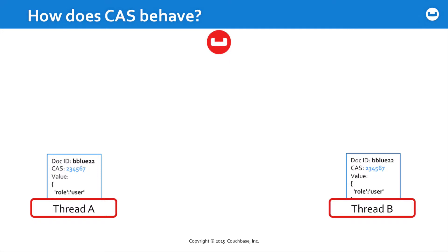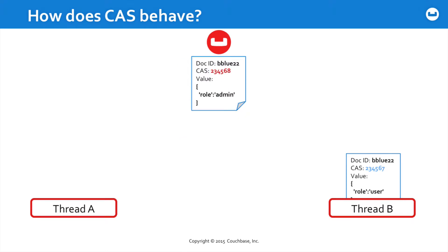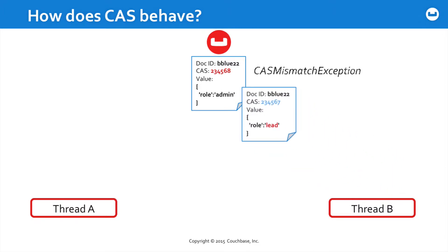Thread A then modifies the document — here changing the role to admin — and then it does a replace. The server updates the CAS value for that document; it's simply been added to the write log. Then thread B also modifies the document to a different role and attempts a replace operation. But at this point, the CAS values no longer match, and because thread B was attempting a replace, a CAS mismatch exception is thrown for you to handle, however appropriate for your application.